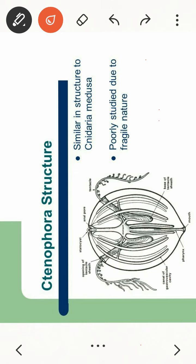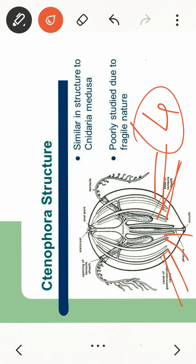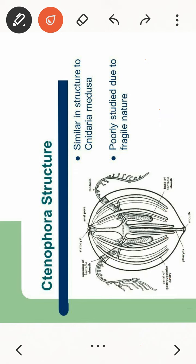Pleurobrachia has this kind of structure. First thing you have to see here, there are eight comb plates. Let's see: one, two, three, four here, then one, two, three, four. So this is four here and four here, so total is eight comb plates. You have to remember this when you make this figure. Then another thing is, these eight comb plates, what do they do?